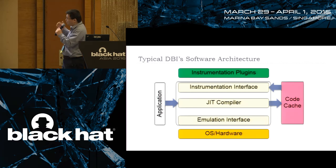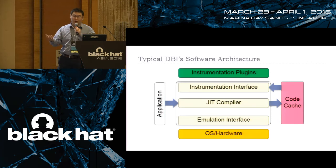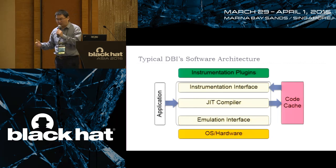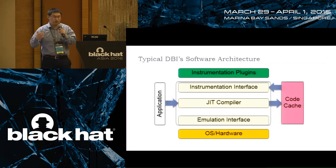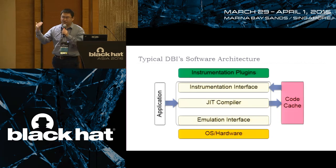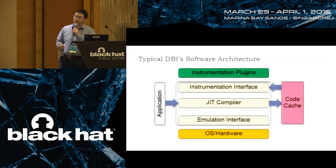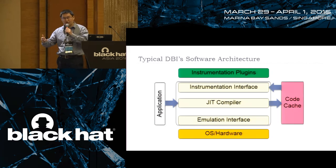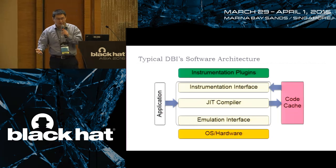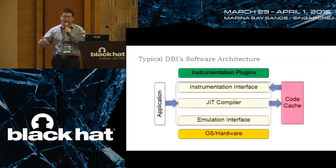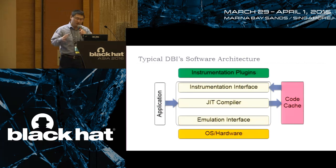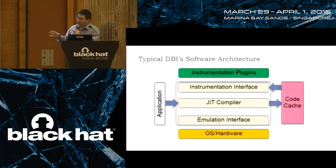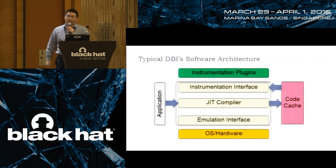Here we list the basic components. You have to implement the JIT compiler to translate native to native. The target code will be kept in a code cache — that's the basic memory. You put all target code in code cache and it's sealed, but at the same time you can monitor the code behavior. Because you want to do instrumentation, you have to call back to the instrumentation framework in DBI. Also the instrumentation framework itself has to access some OS resources, so you have an emulation interface. This picture shows the whole architecture for building this DBI capability.